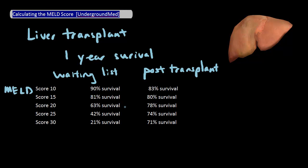So what this is telling us is that for those patients with low MELD scores, for example, a score of 10, the survival rates of patients on the waiting list, or 90%, is better than that of a patient who did get transplant, which is 83%.